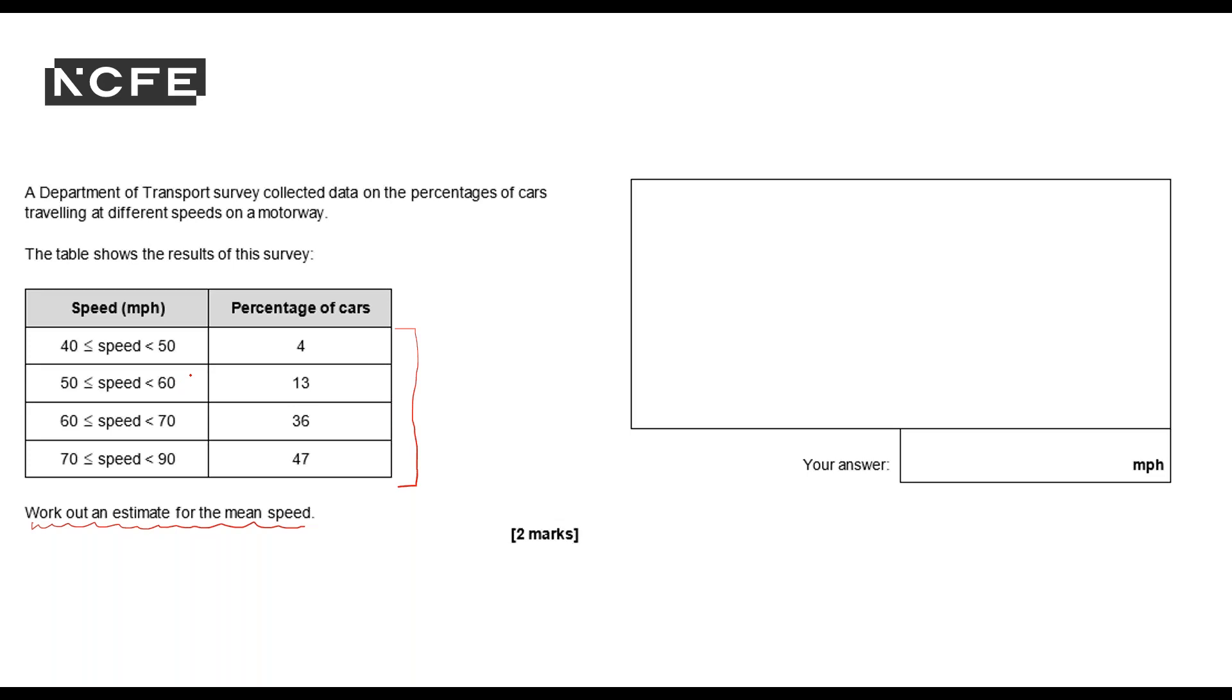So I'm going to do it in exactly the same way as I did the last question. I'll look at my midpoint first. So the midpoint between 40 and 50 will be 45 because 50 take 40 is 10, 10 divided by 2 is 5 and the lowest value 40 plus 5 is 45.